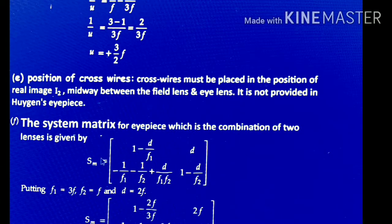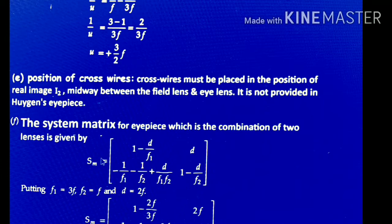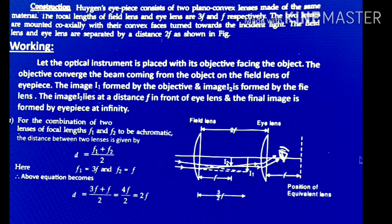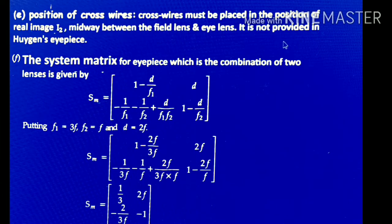The next topic is the position of the crosshair. In the Huygens eyepiece, the crosshair is not placed because the values are not accurate enough. If a crosshair is placed, the measurement becomes more accurate. So the crosshair must be placed at the position of the real image I2, which is the midpoint between the field lens and the eye lens. However, in this case the position of the crosshair is not provided.